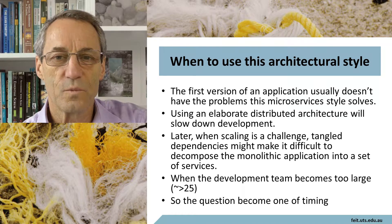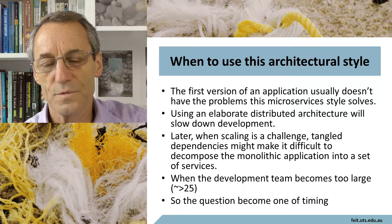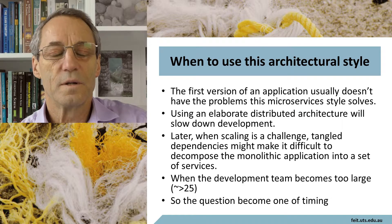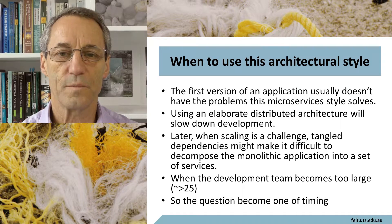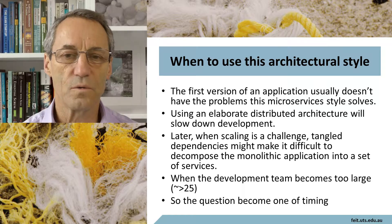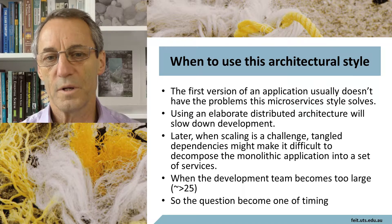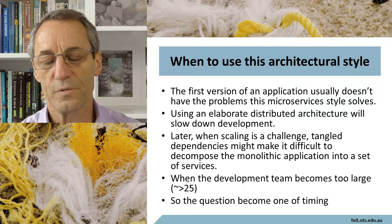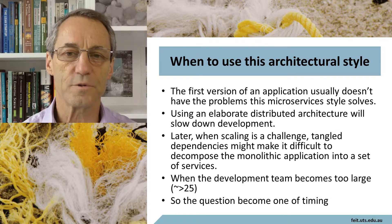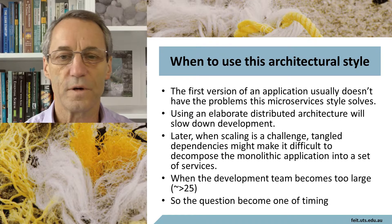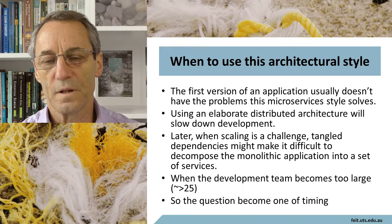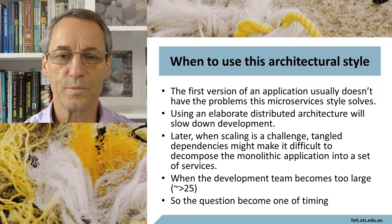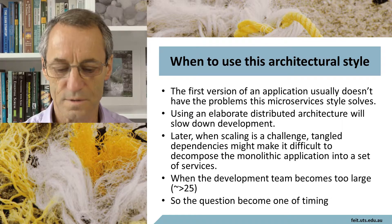One suggestion is that when the development team can't fit around the conference room table — so when they get to be more than about 25 — it's probably time to break the application up. The whole question is how many people can coordinate their efforts well. In a development team, the answer seems to be about five or six. You can get it up to about 25, but unless you do something spectacularly different, it's really difficult to get a large number of people tightly coordinated.